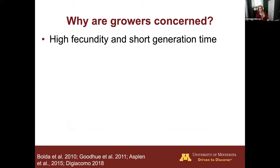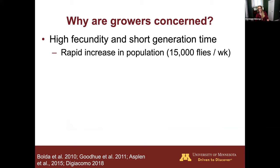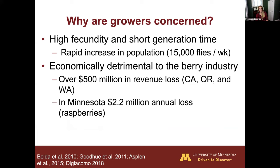Why are growers concerned? SWD has high fecundity and short generation time, meaning populations of upwards of 15,000 flies per week can be produced. It's economically detrimental — in California, Oregon, and Washington when first detected, there was over $500 million in revenue loss. In Minnesota, an analysis found an annual loss of about $2.2 million in raspberries alone. A lot of growers are curious what they can do to combat it, so I'll talk about things still being tested as well as current recommendations.